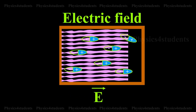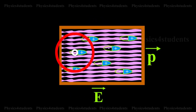When an electric field is applied, the dipoles orient themselves in the direction of electric field. Hence, a net dipole moment is produced.